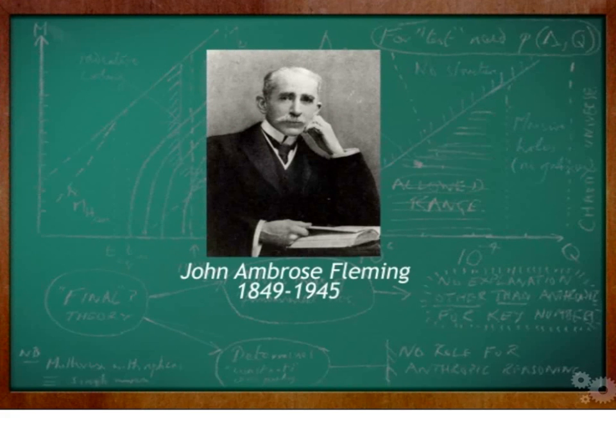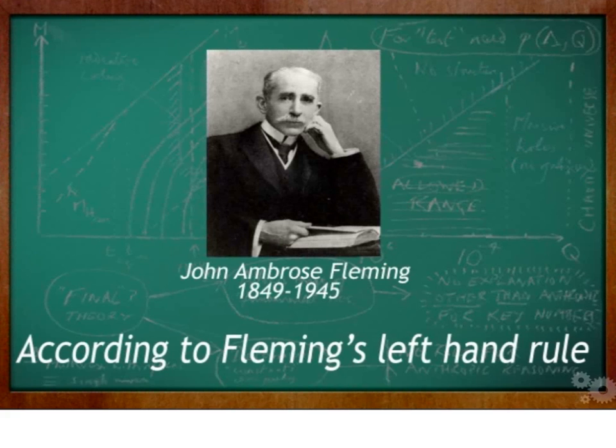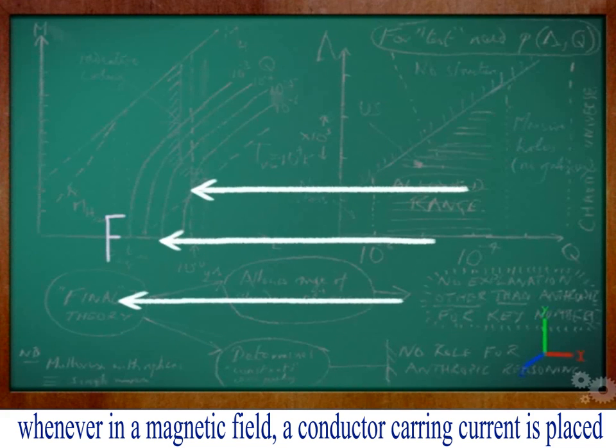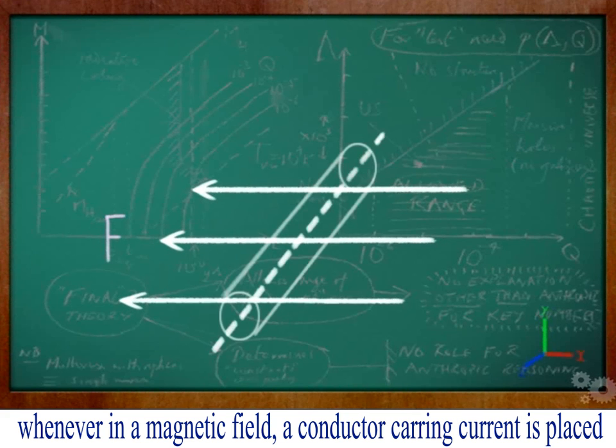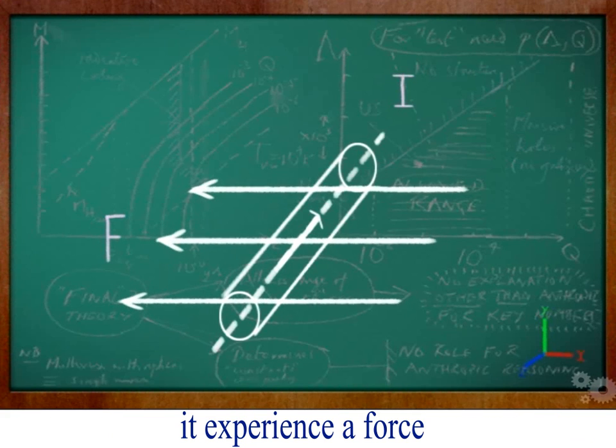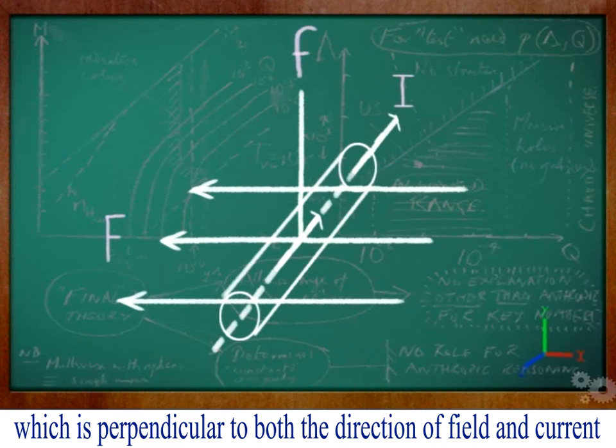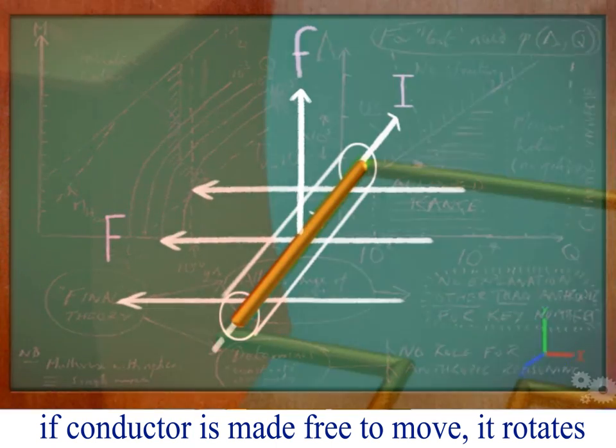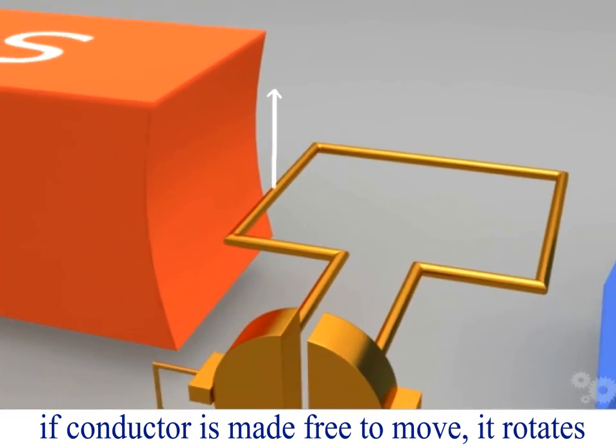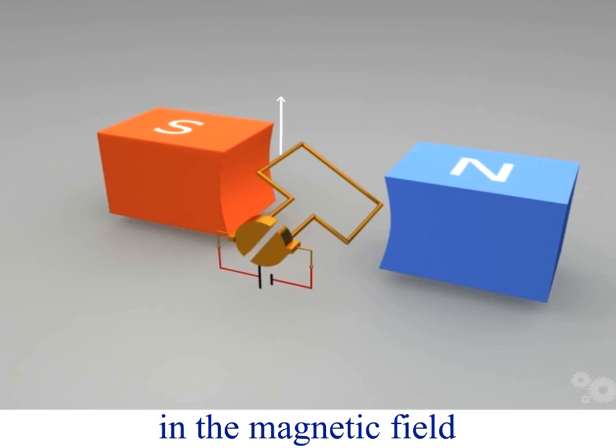According to Fleming's left hand rule, whenever a conductor carrying current is placed in a magnetic field, it experiences a force perpendicular to both the direction of the field and current. If the conductor is made free to move, it rotates in the magnetic field.